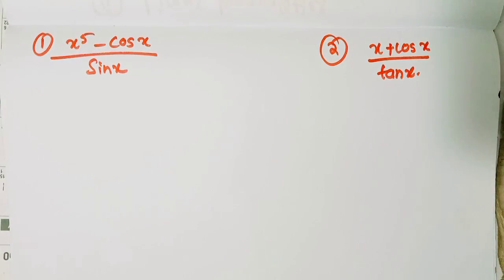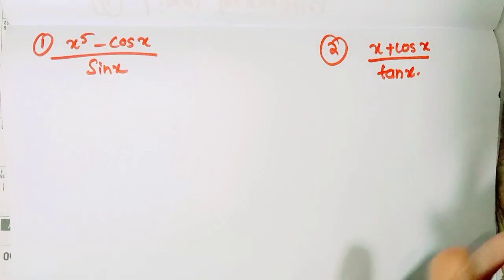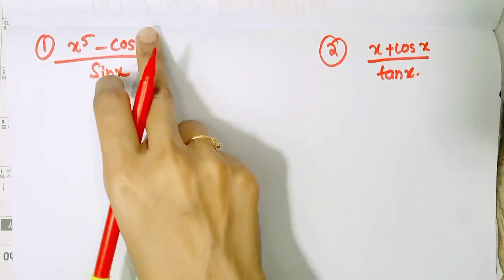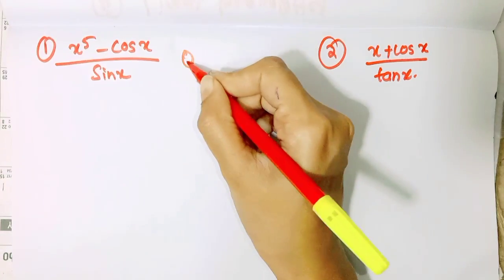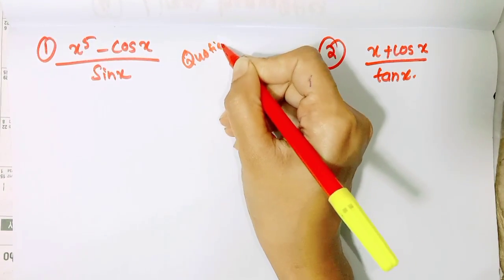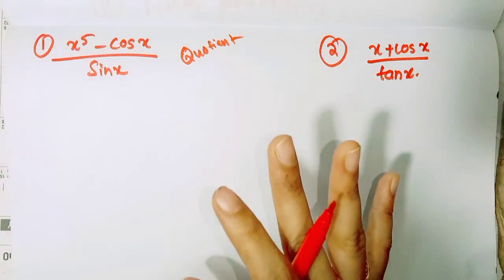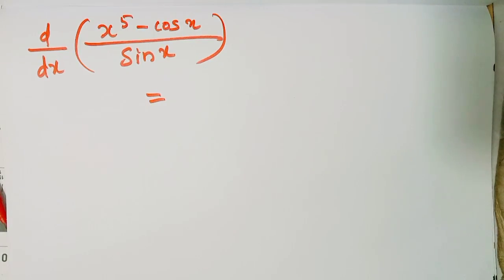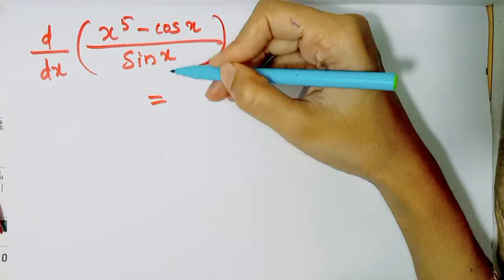Now let's take the derivative. We will discuss each question. We should apply the quotient rule here — the division rule. According to the rule, we can answer the exam. If we have a question, we divide by a function.